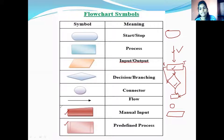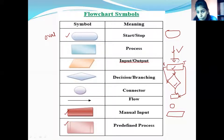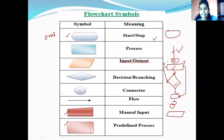Let us see exactly the names of those symbols and what they do. The first symbol is called an oval. The oval is the first symbol we require. It is used to denote either the start or stop of the flowchart. This symbol is used at the beginning or end of a flowchart — it indicates the starting or ending of the flowchart.